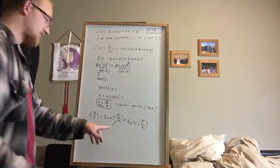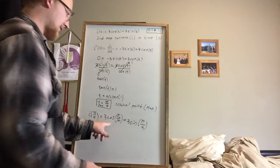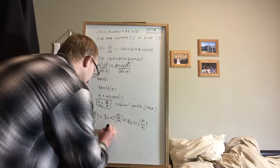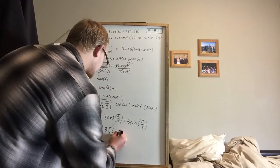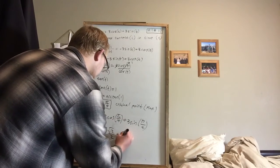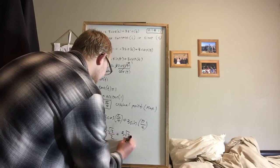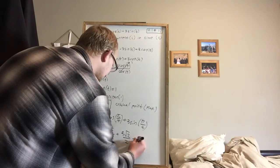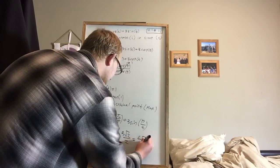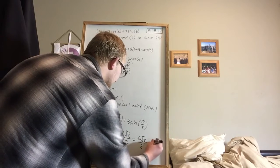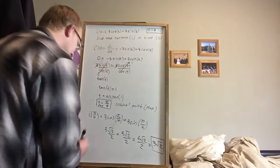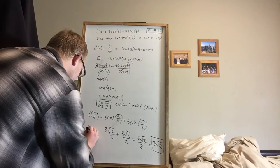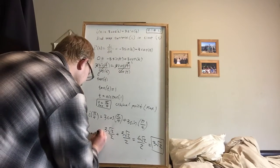And we have 3 cosine of pi fourths plus 3 sine of pi fourths. And just like the last one, because these things are cyclical, cosine of pi fourths is root 2 over 2, so we have 3 root 2 over 2. Sine of pi fourths is also root 2 over 2, so we have 3 root 2 over 2. And what we end up with is 6 root 2 over 2, which can be written as 3 root 2. And this is our current, this is our current maximum, or i sub max. And so this is what they're looking for.